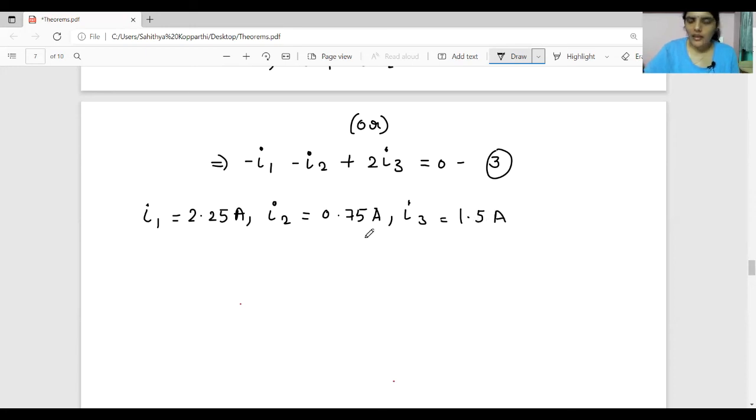I0 is nothing but I1 minus I2. That is 2.25 - 0.75 = 1.5 amperes. Thank you.